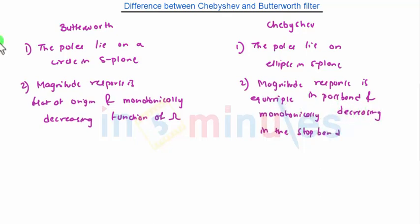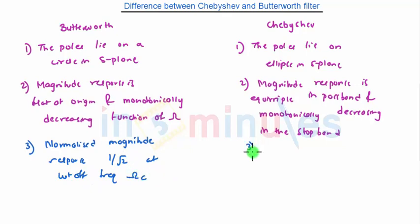These are the two points. Next, we can see the normalized magnitude response has a value that is 1 by root 2 at cutoff frequency omega c. In Chebyshev filter, the normalized magnitude has a value 1 upon root of 1 plus eta square at cutoff frequency omega c.